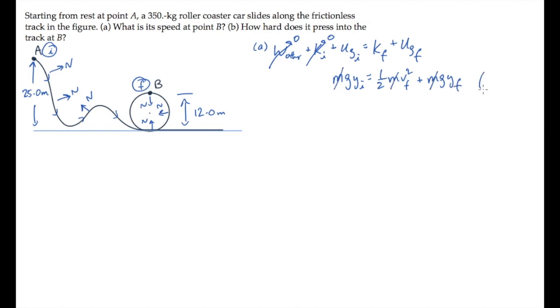The mass cancels from this equation, and we can solve for the final speed, which is the speed at point B. It equals the square root of 2g times the difference in the heights, initial minus final. We can substitute those values, taking the ground as our reference, so that Yi is 25 meters and Yf is 12 meters, finding that the car is moving 16 meters per second when it gets to the top of the circular track.